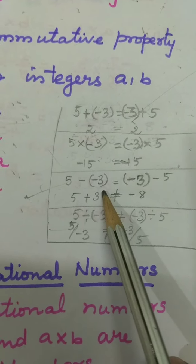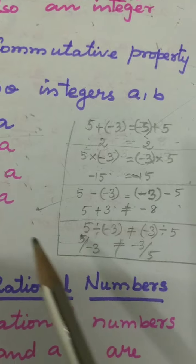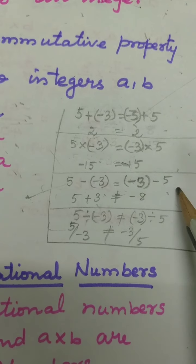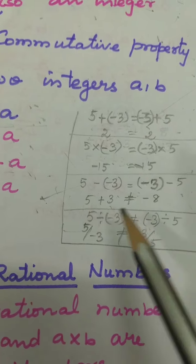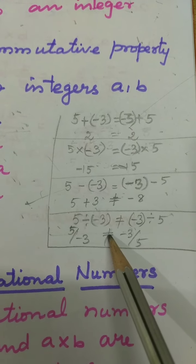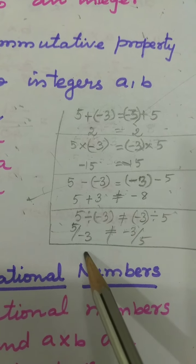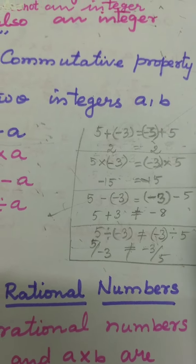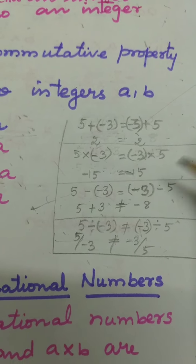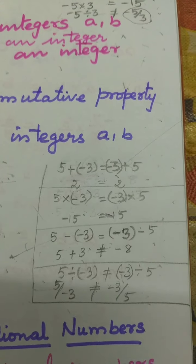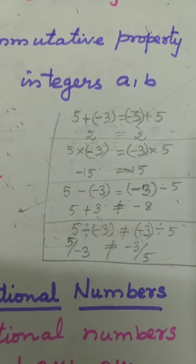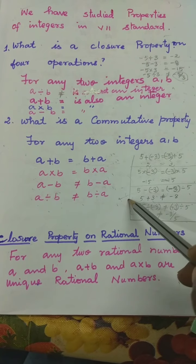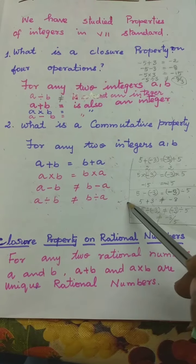For subtraction: 5 minus minus 3 is equal to 5 plus 3, which is 8. But minus 3 minus 5 gives minus 8, so they are not equal. For division: 5 divided by minus 3 gives minus 5 by 3, and minus 3 divided by 5 gives minus 3 by 5. They are not equal. So commutative property is not true in subtraction and division, but is true in addition and multiplication.